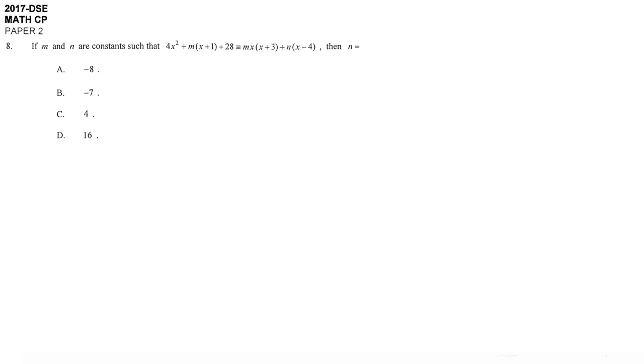For identity, there is some shortcut if we can remove one of the unknowns by putting a suitable value of x. Be aware that identity means no matter what is x, this is always correct. So you can assign any value of x if you think it's feasible.